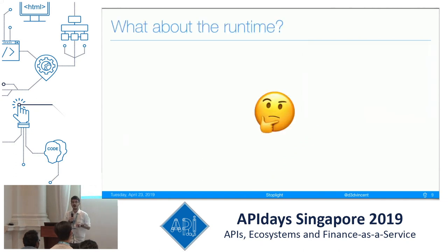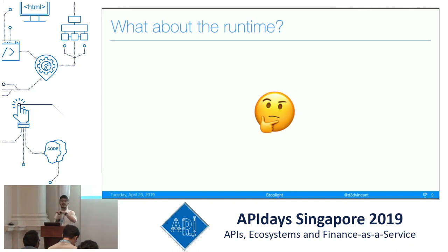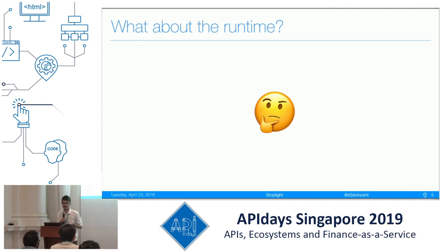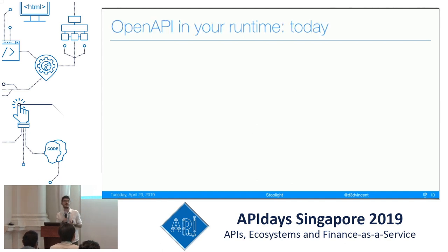Let's make a very quick recap. We saw OpenAPI used for documentation, client generation, testing, and linting. All those phases are happening before the deploy — you generate documentation, you run tests before deployment, you do linting before deployment. But after you deploy the API, most of the time the OpenAPI document is just forgotten. Nobody cares about it anymore. And I've been asking myself: why are we not closing the lifecycle? What can we do with the OpenAPI document at runtime, when the API has been deployed?